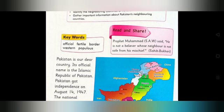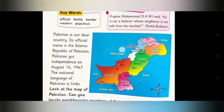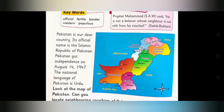Now read with me: Pakistan is our dear country. Its official name is Islamic Republic of Pakistan. Pakistan got independence on August 14, 1947. The national language of Pakistan is Urdu. Pakistan hamara pyara mulk hai, iska sarkari naam Islami Jamhuriya Pakistan hai. Pakistan 14 August 1947 ko azad hua. Pakistan ki sarkari zaban Urdu hai.